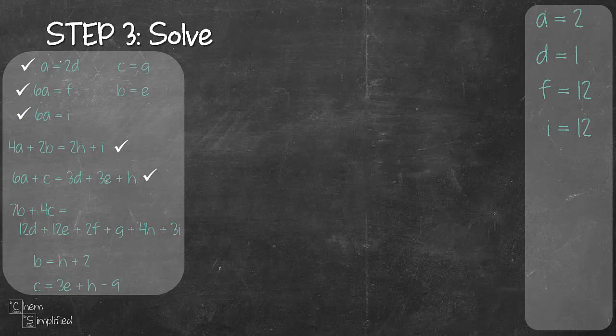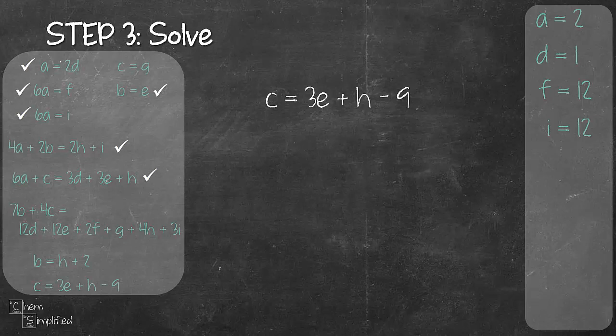Picking up from our last equation which is c equals 3e plus h minus 9. Let's try to reduce it to two variables. From our list of equations on the left we know that b equals e and that b also equals h plus 2. So let's sub in the equation for e and that will give us c equals 4h minus 3.